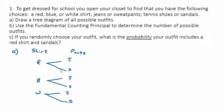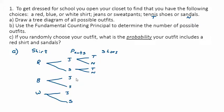Now we add shoes — tennis shoes or sandals. Every outfit has the option of tennis shoes or sandals, so each of those six outfits branches into two. Each branch of this tree represents one complete outfit. So we end up with 12 possible outfits total.